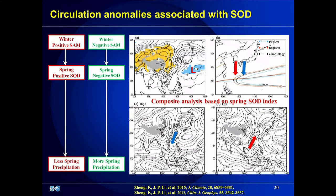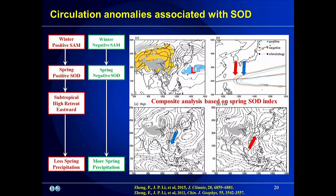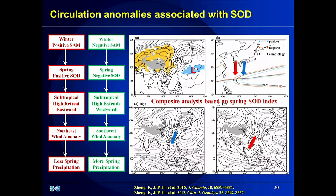A positive winter SAM corresponds to a positive SOD, and a negative SAM corresponds to a negative SOD. To determine whether the SOD is the bridge linking the winter SAM and spring precipitation, we calculate circulation anomalies associated with the SOD. When the SOD is in a positive phase, the subtropical high is weaker and retreats eastward, with northeast wind anomalies over South China leading to less water vapor transport and less precipitation. When the SOD is in a negative phase, the circulation anomalies are reversed, leading to more precipitation over South China.